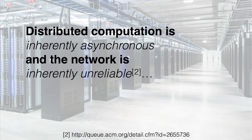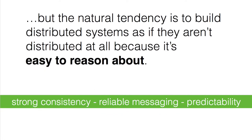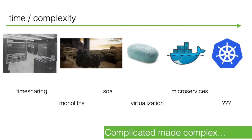The fact is, distributed computation is inherently asynchronous, and the network is inherently unreliable. As much as we'd like that not to be the case, that's just how it is. But we still design systems the way we used to — assuming they're not distributed at all — because it's easier to reason about. If you don't have to think about strong consistency or reliability of messaging, things are just predictable. But that's not how it is anymore. It's fundamentally changed with the prevalence of cloud.